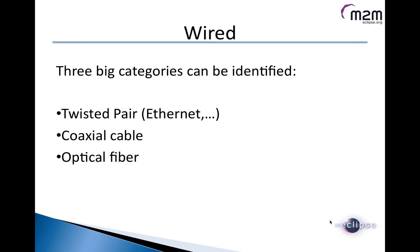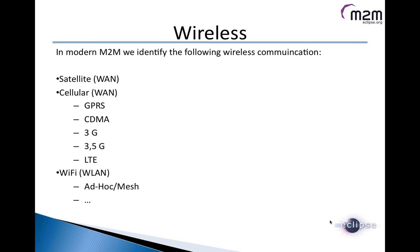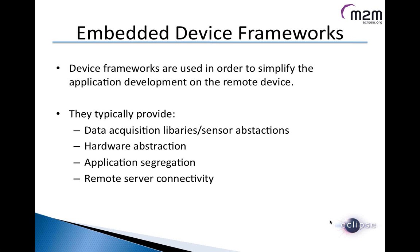We also use wireless communication. In modern machine-to-machine applications, the wireless categories include satellite communication, cellular — the most popular — including GPRS in Europe and CDMA, 3G, 3.5G in the US, with LTE now emerging. We also have Wi-Fi, which may use mesh technology or ad-hoc connections. At this point we've described the different ways of acquiring information from the field and the different media that can be used for sending information to a remote server.